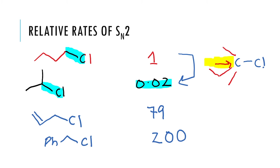When I move to allyl chloride — this is the allyl group — the rate actually goes up by about 79. If I look at the structure of this compound and allyl chloride, there is actually not a huge difference in the sterics. There is a double bond in allyl chloride and no double bond in the other, and that is about it. But the rate increases by 79.4.